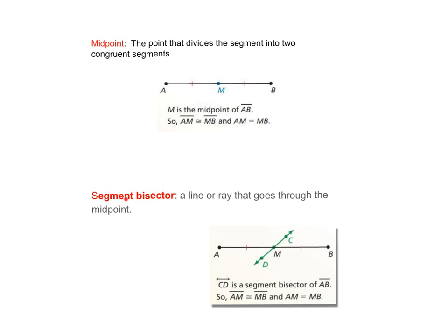Your next concept is segment bisector. The definition is a line or ray that goes through the midpoint.